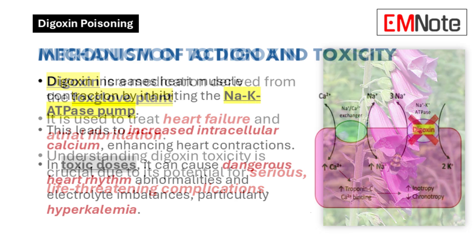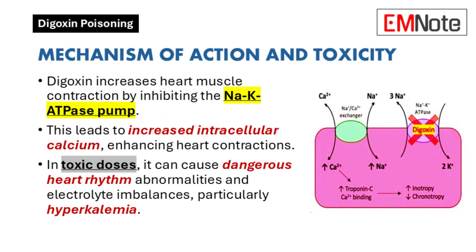At the cellular level, digoxin inhibits the sodium-potassium adenosine triphosphatase pump. Basically, it increases intracellular calcium, and this increased calcium leads to stronger heart muscle contractions. However, excessive calcium can lead to dangerous heart rhythm abnormalities and electrolyte imbalances. Hyperkalemia is a particular concern in toxic doses.